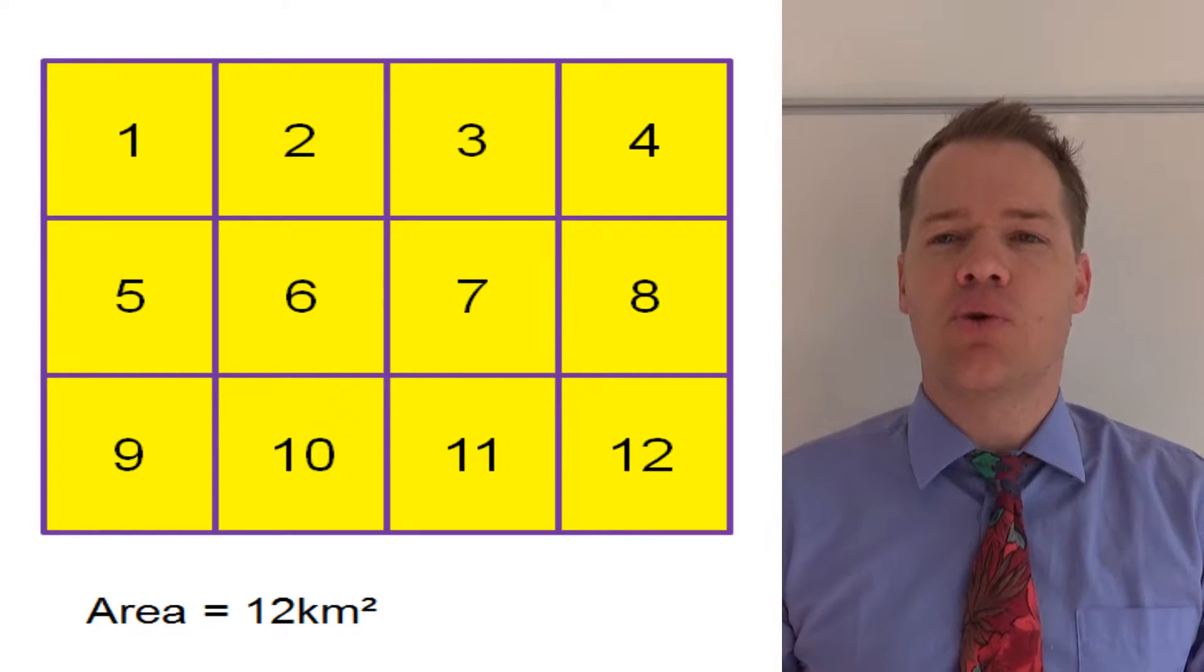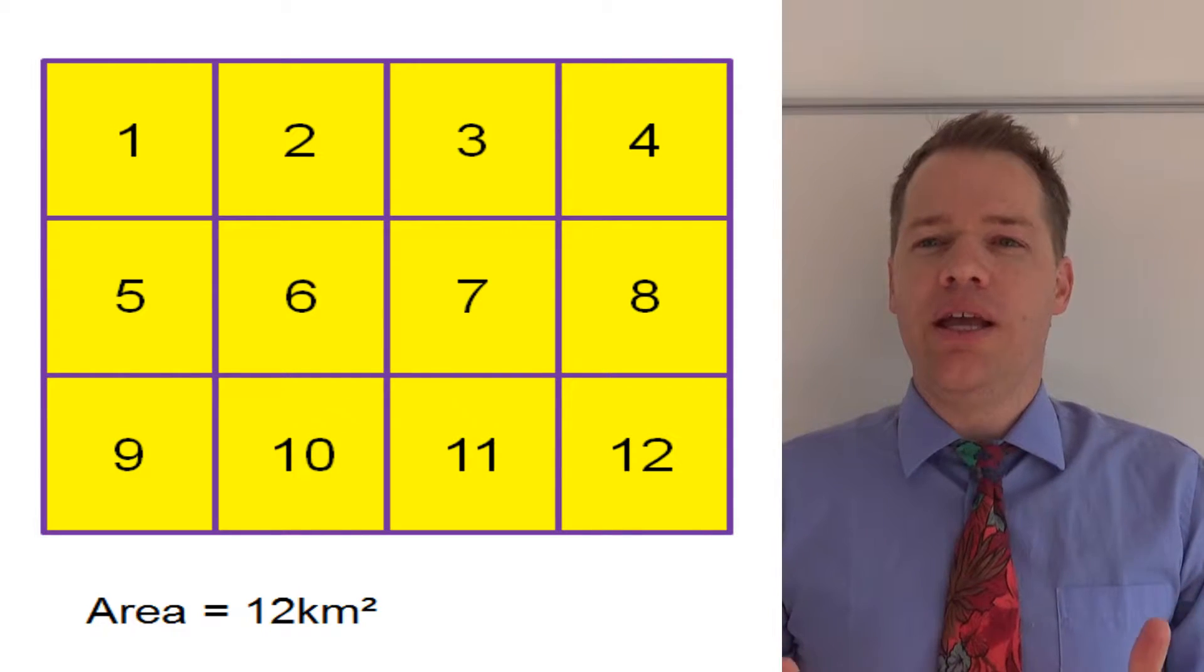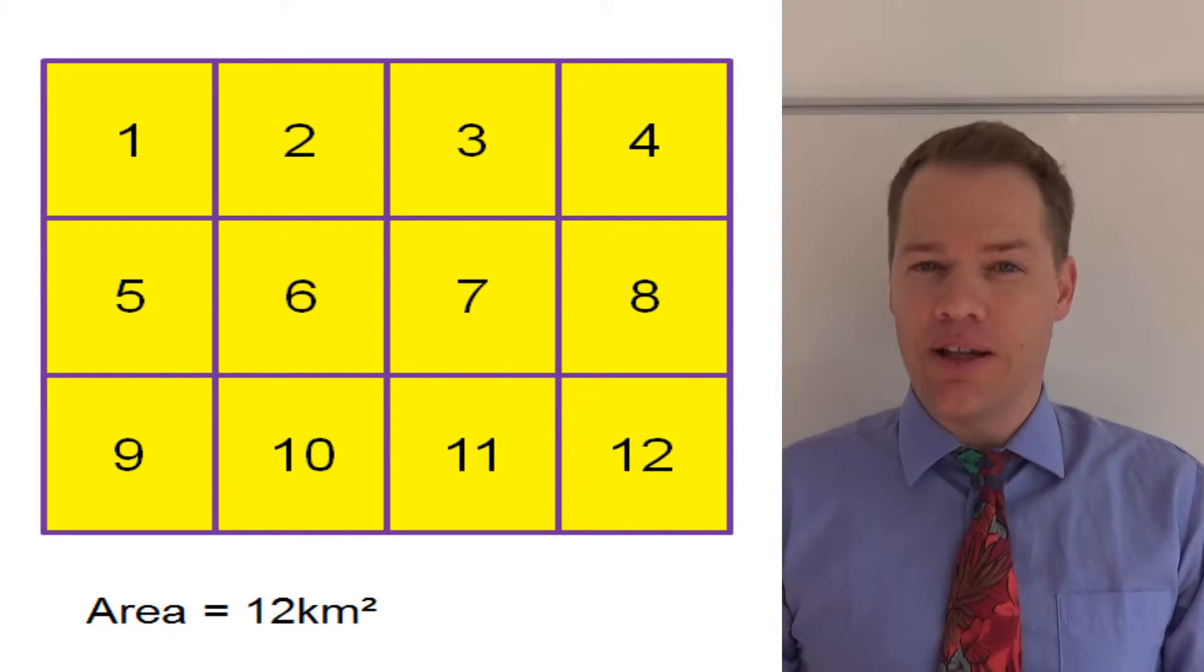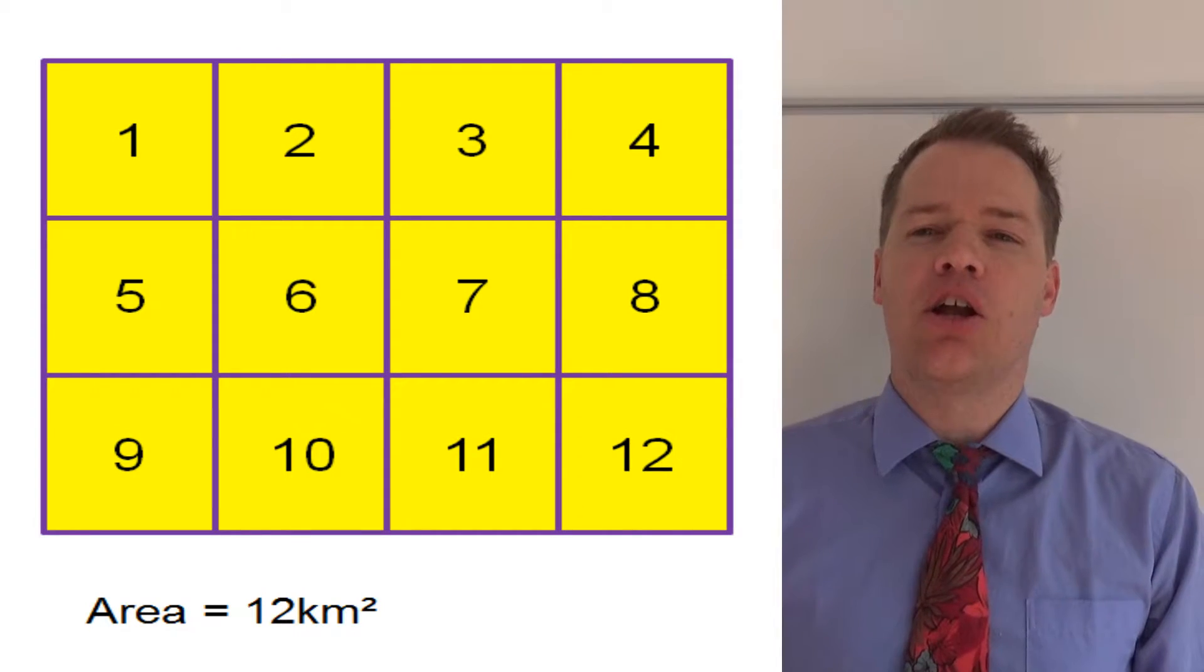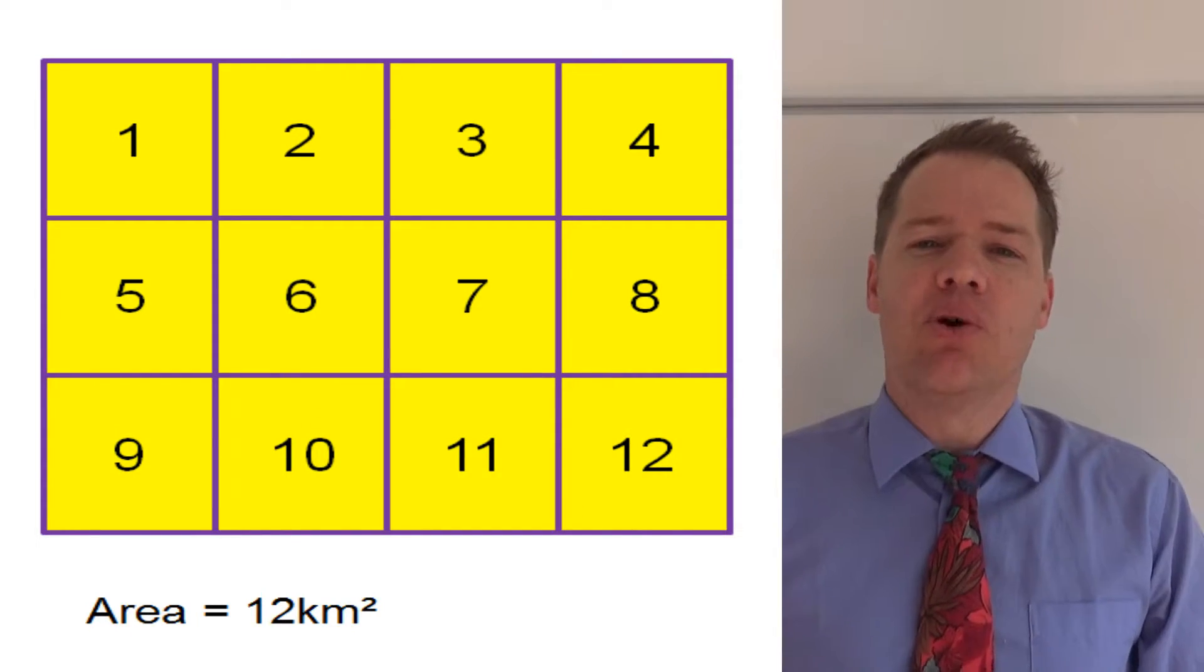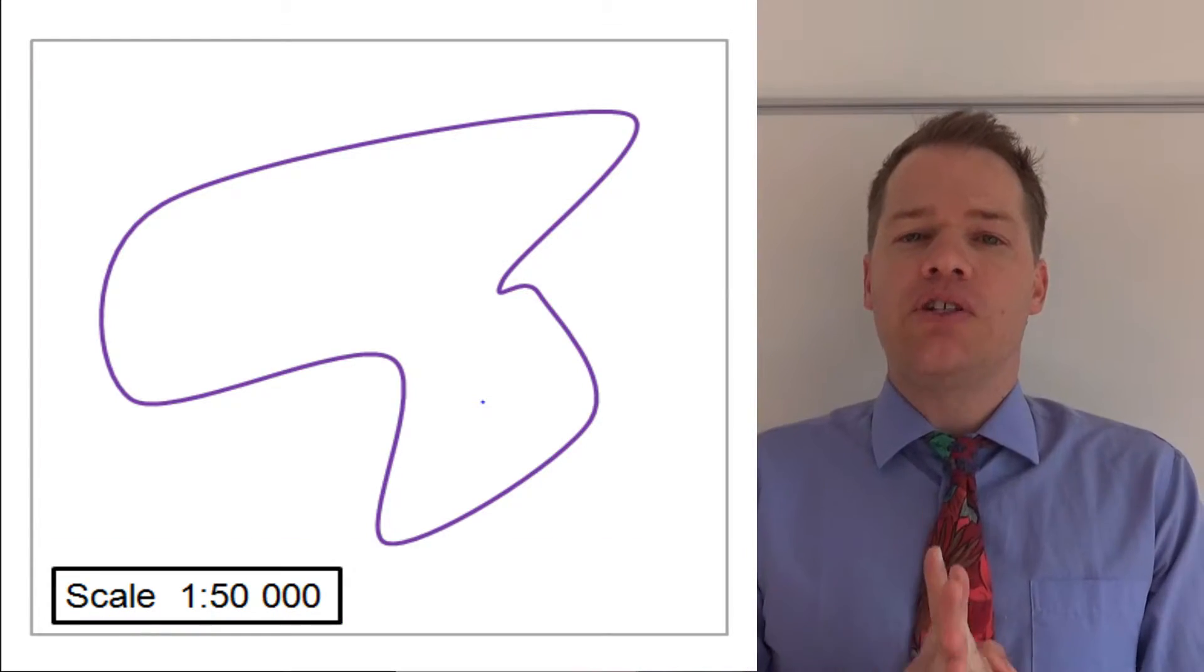So on the screen you'll see an example of an area, and this area is 12 square kilometers. So in that area we should be able to fit 12 squares of which each side is one kilometer.